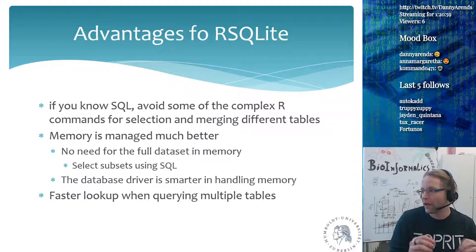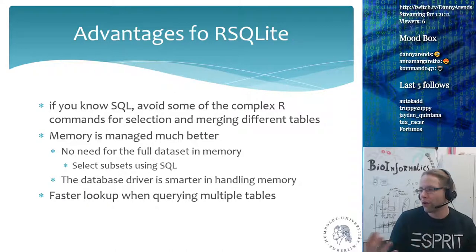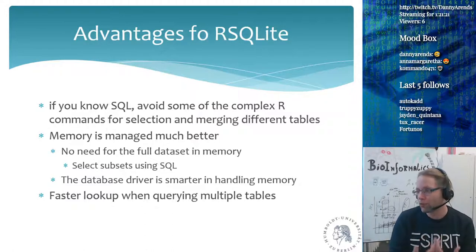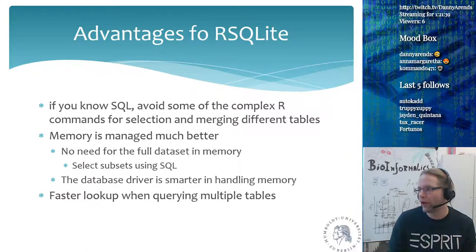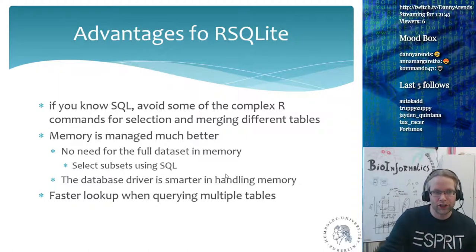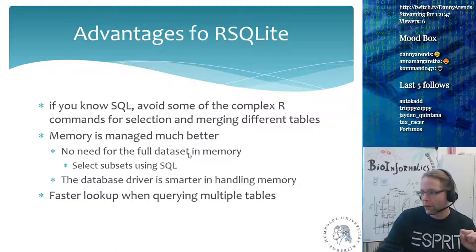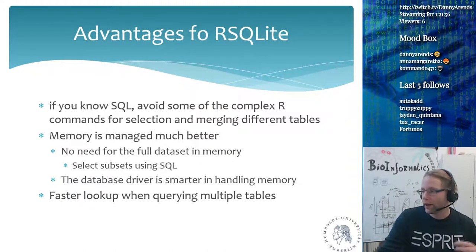If your disk is one terabyte, you can have one terabyte of data and use SQL to directly query from that massive database only the data you want — only the subset gets transferred from the file into R memory. The database driver is much smarter at handling RAM than R is. Also, when querying multiple tables constrained by foreign key constraints, it's much faster using the database driver because it's written and optimized specifically for these kinds of queries, whereas R is a general-purpose language. SQL is focused on performance — doing queries as quickly as possible.